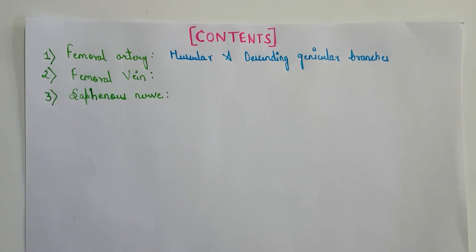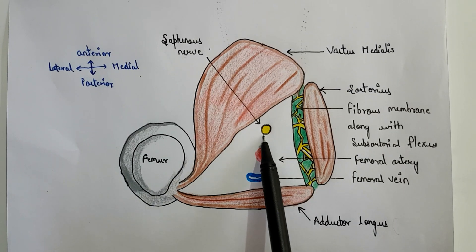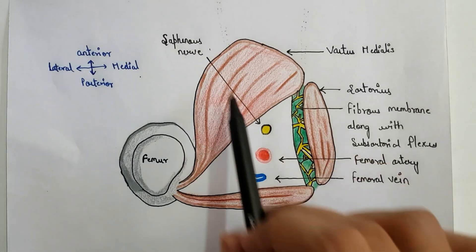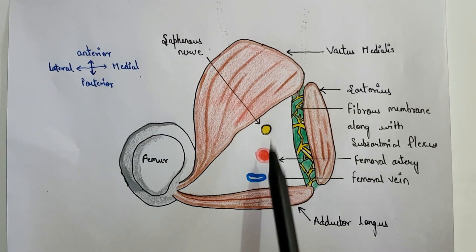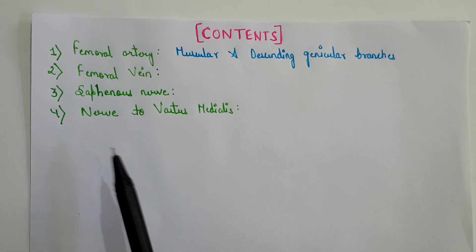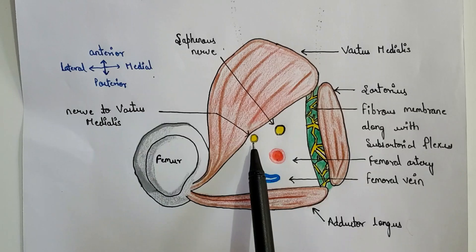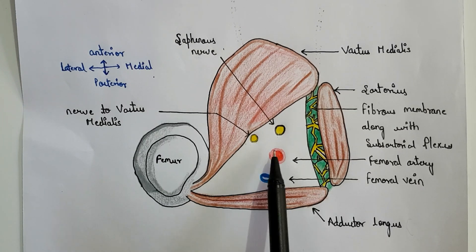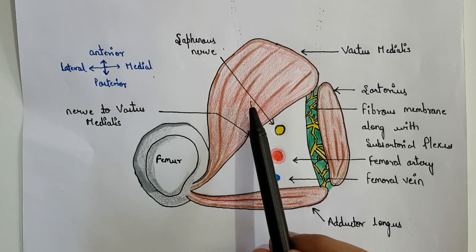The third content is the saphenous nerve, which is the longest cutaneous nerve of the human body. It is present anterior to the femoral artery. Next we have the nerve to the vastus medialis, present lateral to the femoral artery. This nerve supplies the vastus medialis muscle.